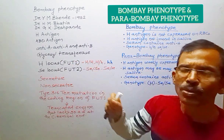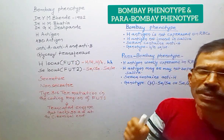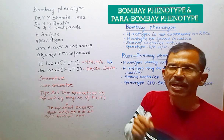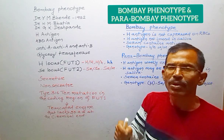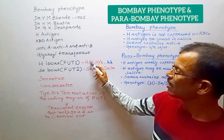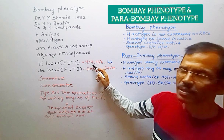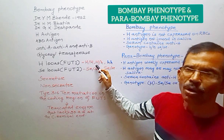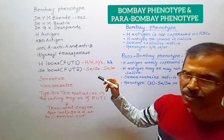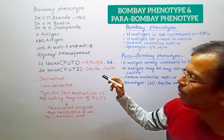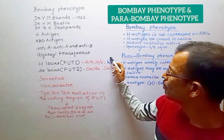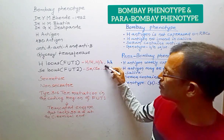So the genotype of persons which express H antigen on red blood cells should be H/H or H/h. When both copies are inactive, then the Bombay phenotype arises.